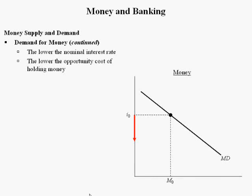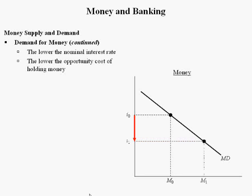If interest rates are high, you probably don't want to hold much money in your wallet or have lots of petty cash in the drawer. However, when interest rates fall, you're more likely to hold money, so the quantity of money demanded goes from M₀ out to M₁.